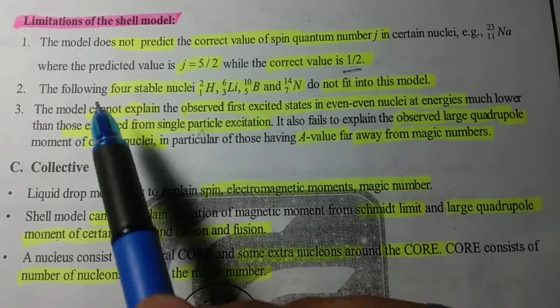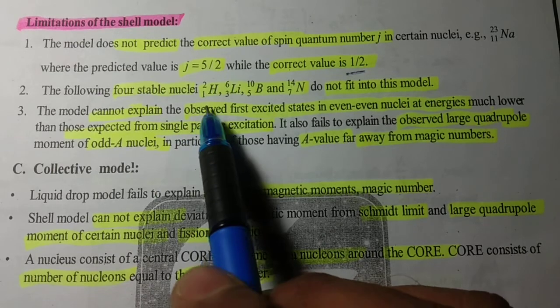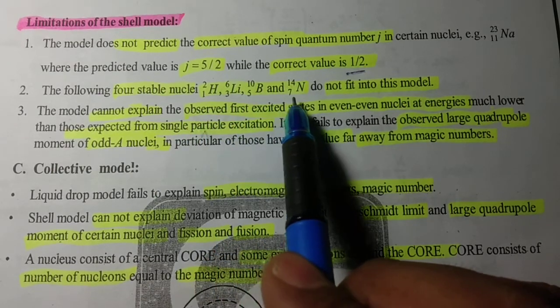The second limitation is the following four stable nuclei: hydrogen, lithium, boron, and nitrogen do not fit into this model.